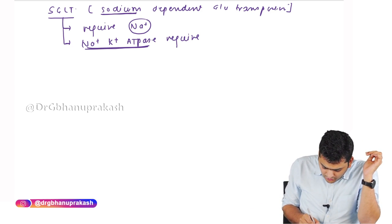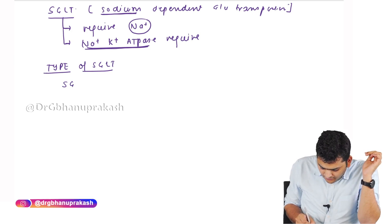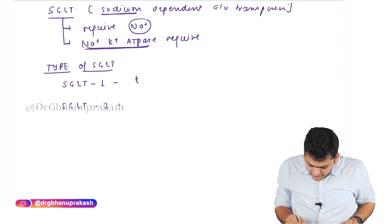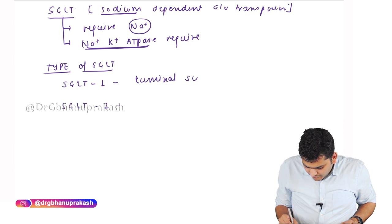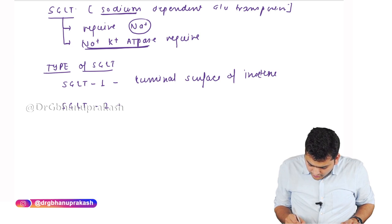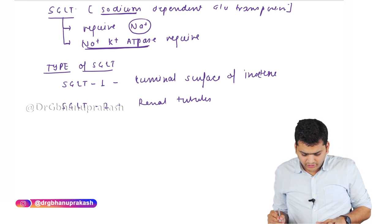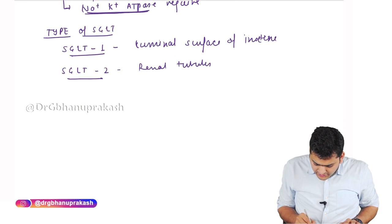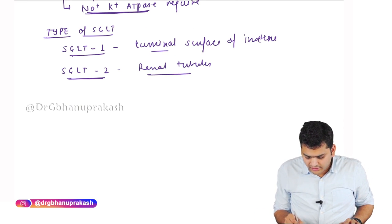There are two types of SGLT. SGLT 1 is found in the luminal surface of the intestine, whereas SGLT 2 is found in the renal tubules. Let's understand the clinical implications of knowing about SGLT1, SGLT2, and the luminal and basolateral sides.